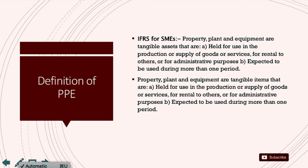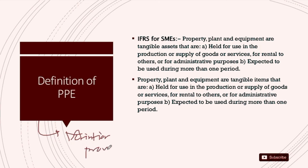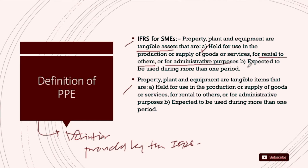Now we will understand the definition of PP&E. When we say we are accounting for PP&E, we need to understand what PP&E means. Under IFRS for SMEs, PP&E means those tangible assets that are held for use in the production or supply of services, for rental to others, for administrative purposes, and expected to have a use duration of more than one year.